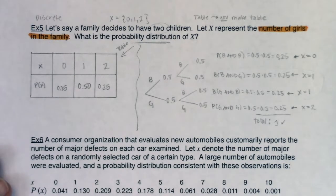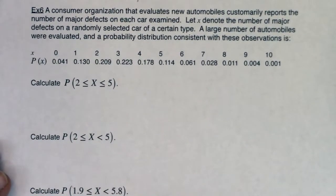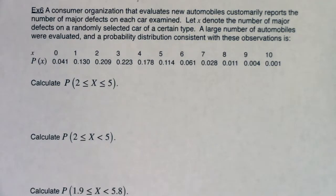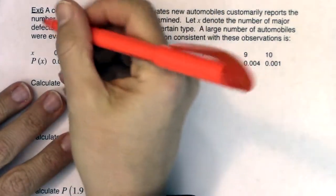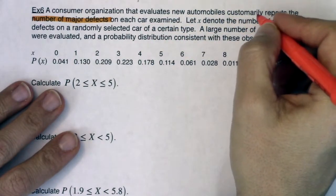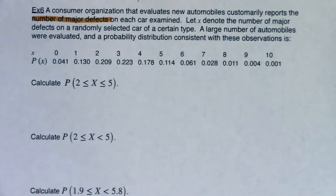Let's continue on with example six. As we read this problem, listen for the variable. A consumer organization evaluates new automobiles and reports the number of major defects on each car examined. Let x denote the number of major defects on a randomly selected car of a certain type. A large number of automobiles were evaluated, and a probability distribution consistent with these observations is given. So my variable is the number of major defects, and I already have a PDF.